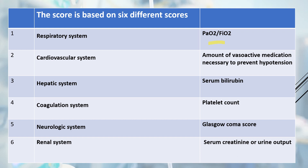In the cardiovascular system, you check for the amount of vasoactive medication or inotropes which is necessary to prevent hypotension. For the hepatic system, you evaluate bilirubin level. For coagulation, you check the platelet count. For neurologic, you use the Glasgow Coma Scale. For the renal system, the important variables are serum creatinine or urine output.